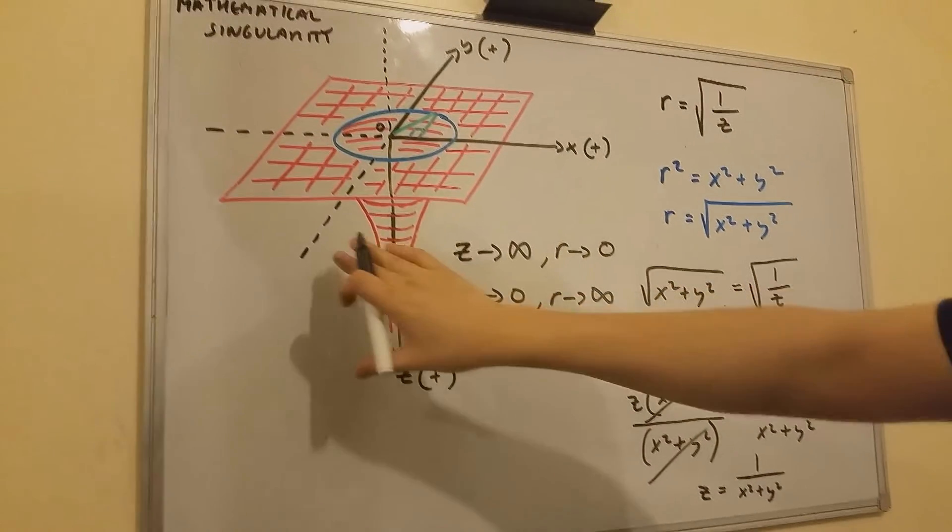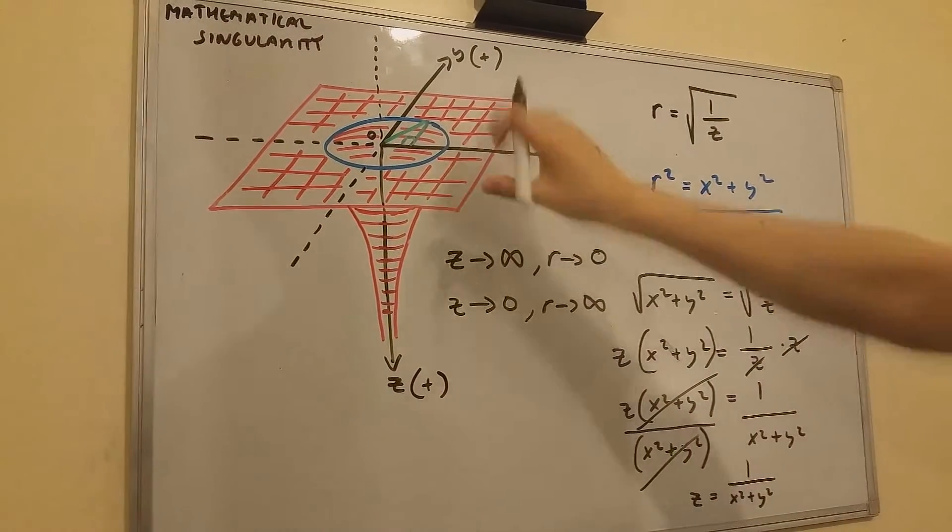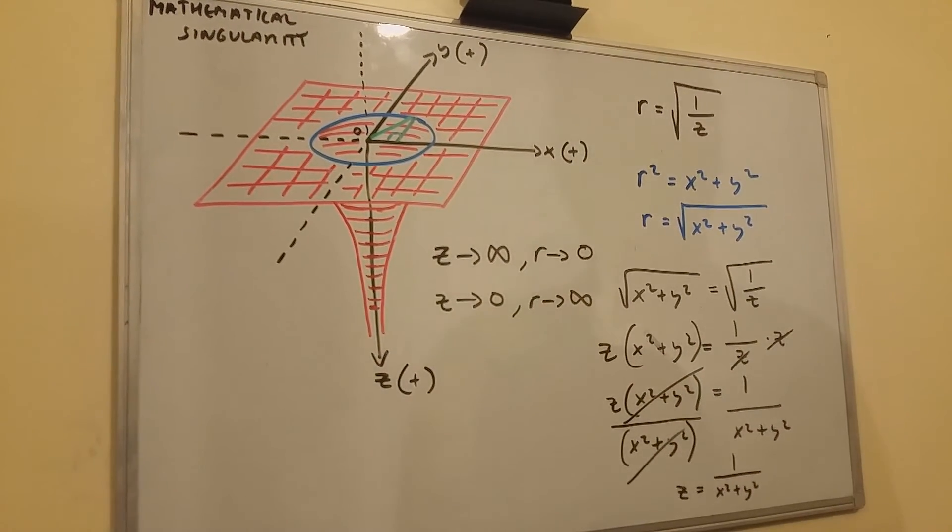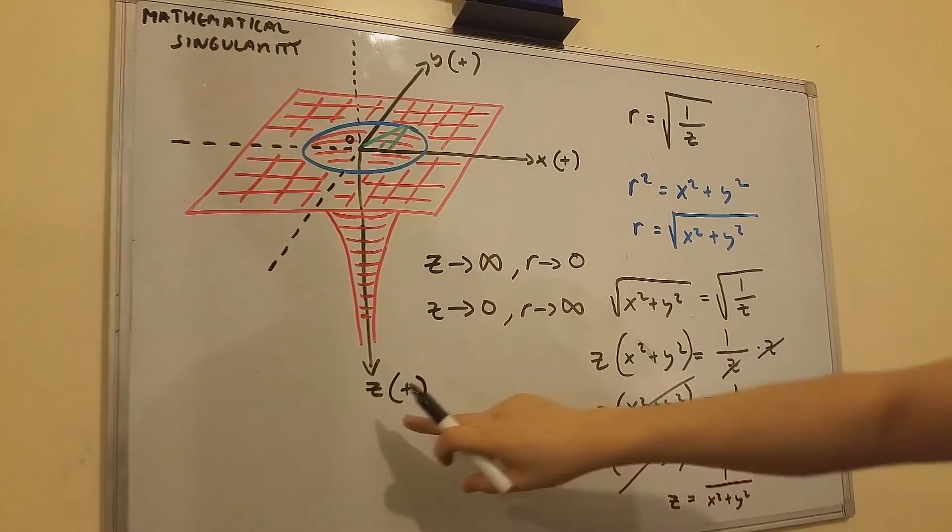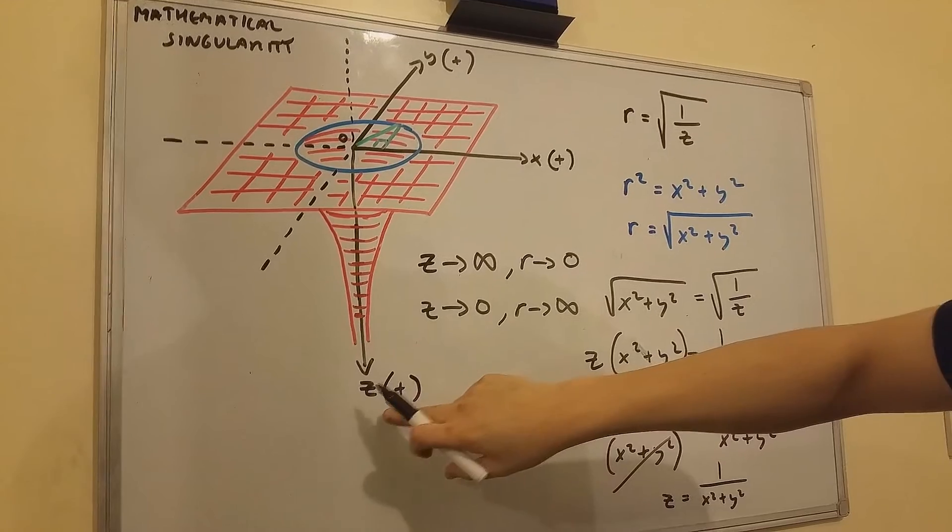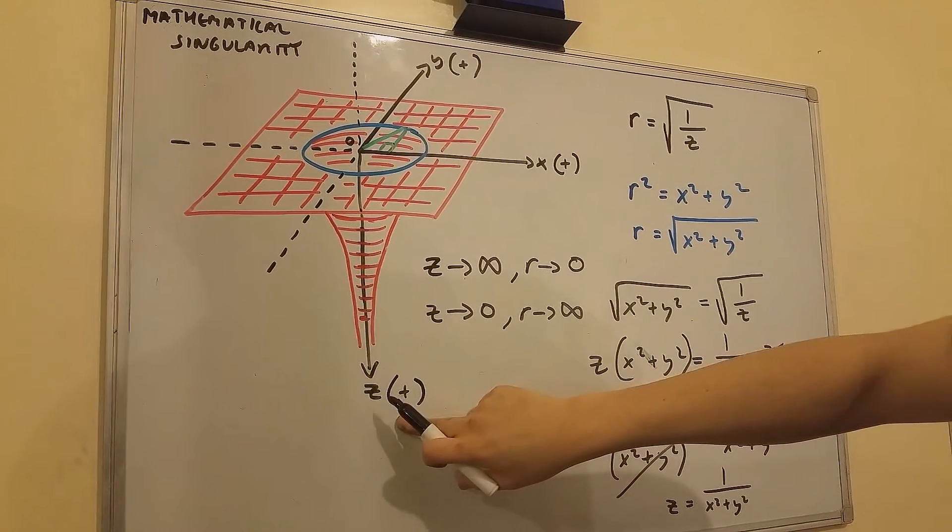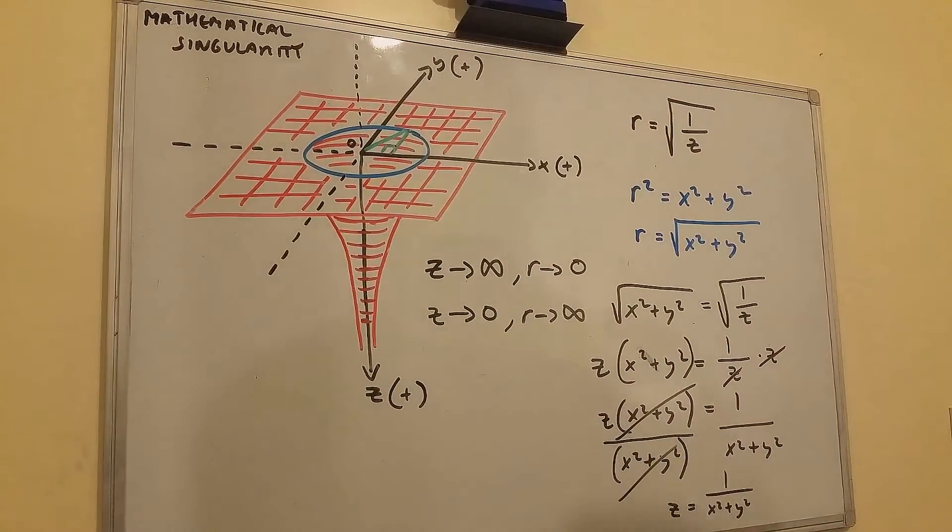You are going to get this singularity over here. It's going to look like this. Now, the singularity may be turned upwards because the positive z axis is going to be up here on your graphing software.